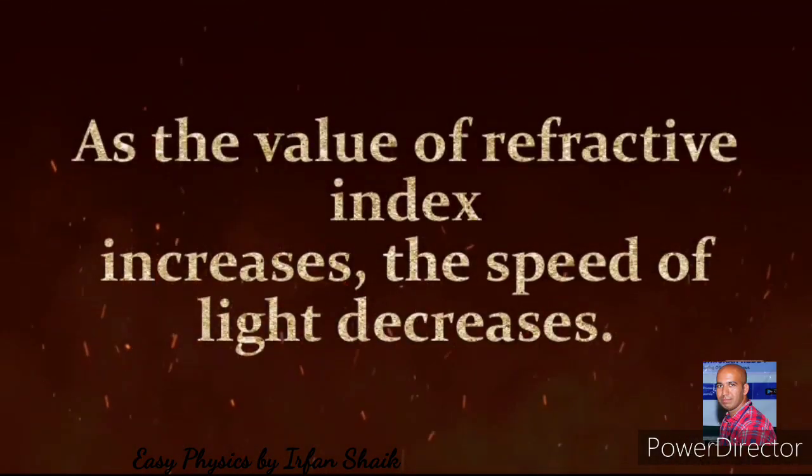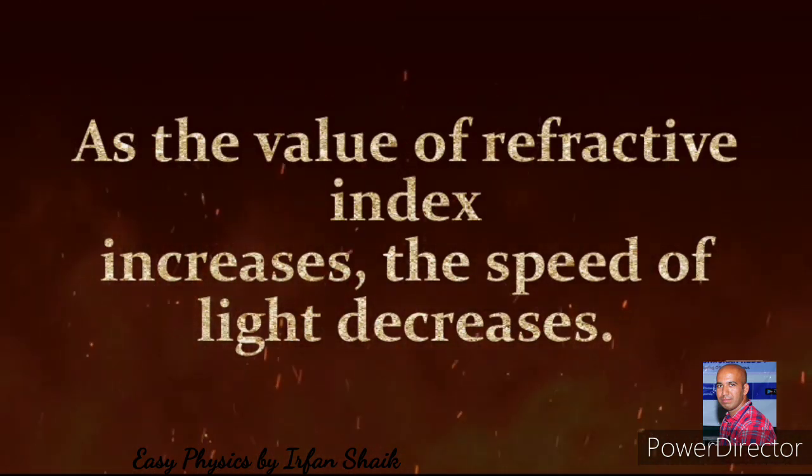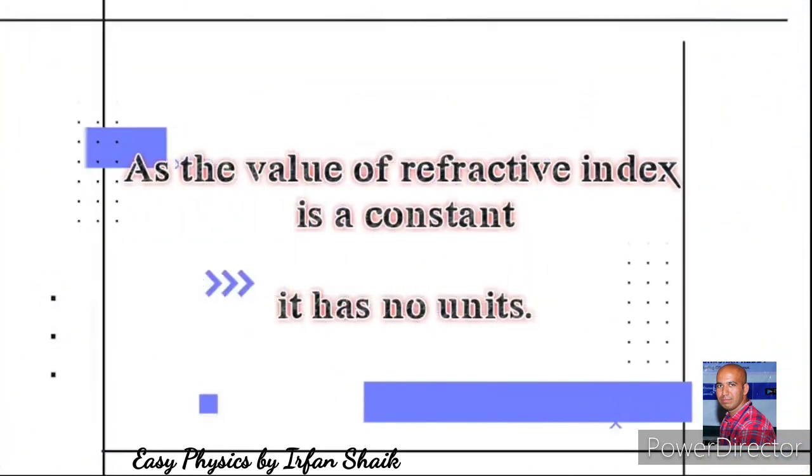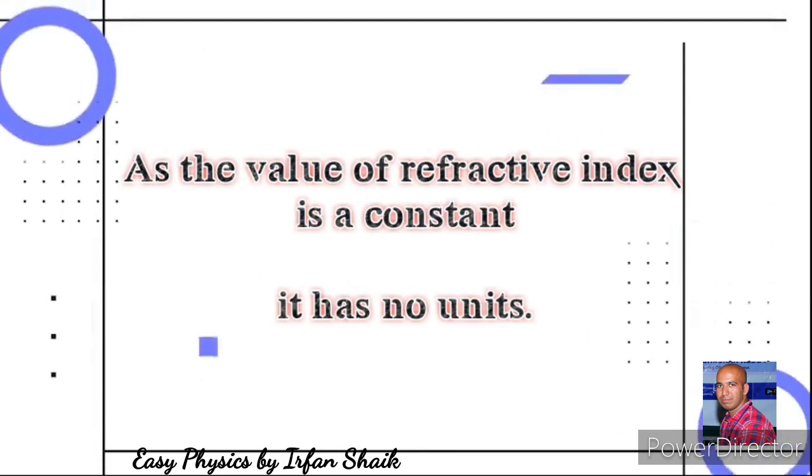As the value of refractive index increases, the speed of light decreases. We know that the value of refractive index is a constant, so it has no units.